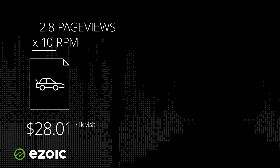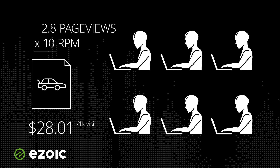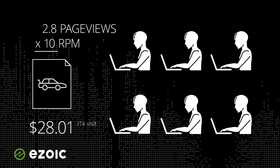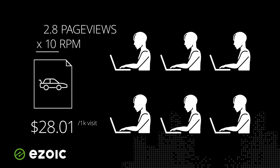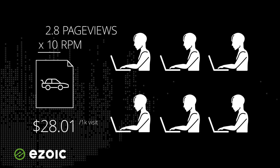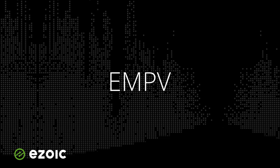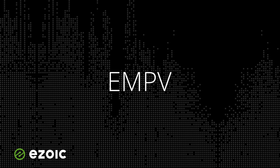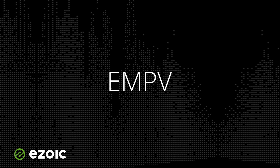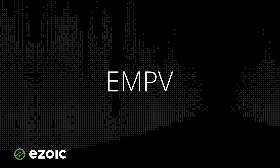The landing page with a $10 RPM averages a higher number of page views per visit. If you only focus on RPMs, you might think the other landing page generates more actual revenue, but you'd be wrong. That's why EPMV is the most accurate way of evaluating how much a site earns per visitor, and why it should always be used when optimizing a website instead of RPMs or CPMs.